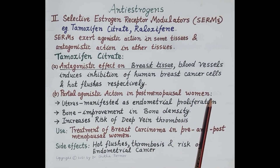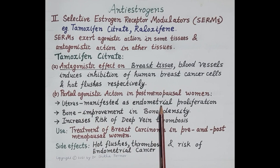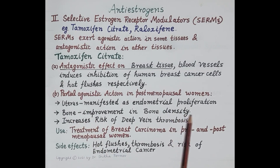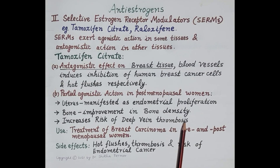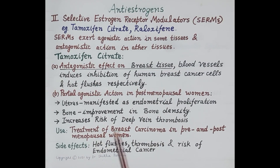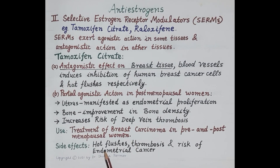Partial agonistic action of tamoxifen is seen in postmenopausal women in the absence of estrogen. On the uterus it causes endometrial proliferation similar to estrogen; on bones it causes improvement of bone density. Tamoxifen also increases risk of deep vein thrombosis. Since it exerts antagonistic effect on breast tissue, it is used in treatment of breast carcinoma in pre- and post-menopausal women, though some cells develop resistance. Side effects include hot flushes, thrombosis, and risk of endometrial cancer.